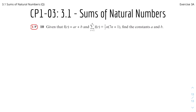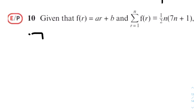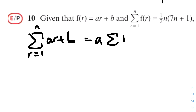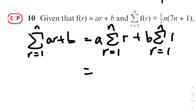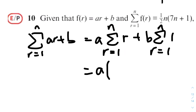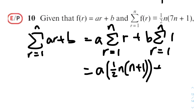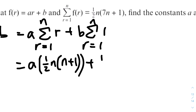Last question: given that f(r) equals ar plus b, and the sum of f(r) from r equals one to n equals half n times (7n plus 1), find the constants a and b. We substitute f(r) as ar plus b: the sum of (ar + b) equals a times the sum of r, plus b times the sum of one. We know the sum of r equals half n(n+1), so we get a times half n(n+1).